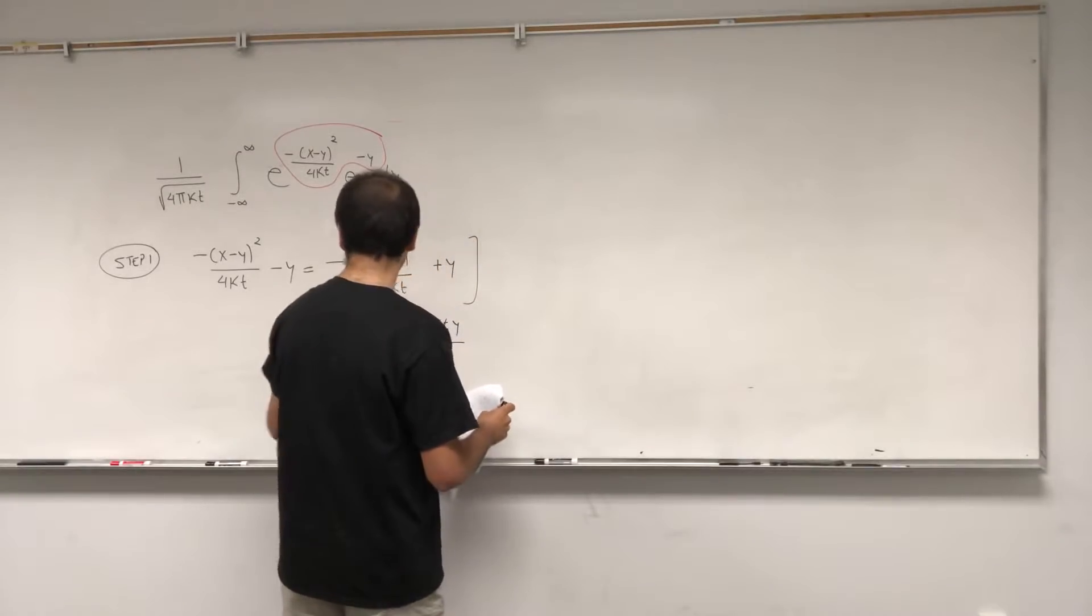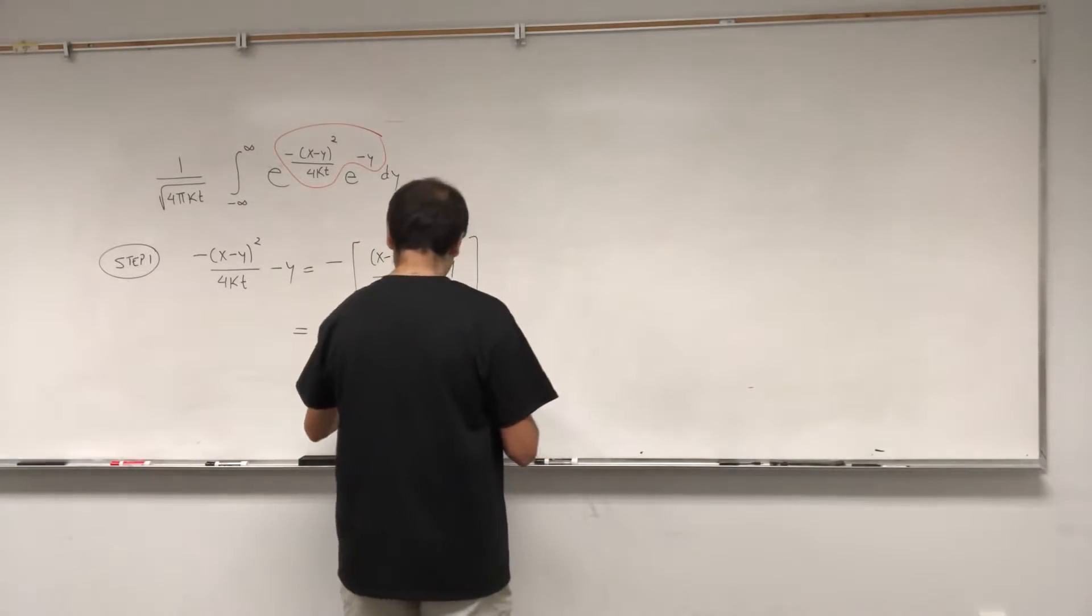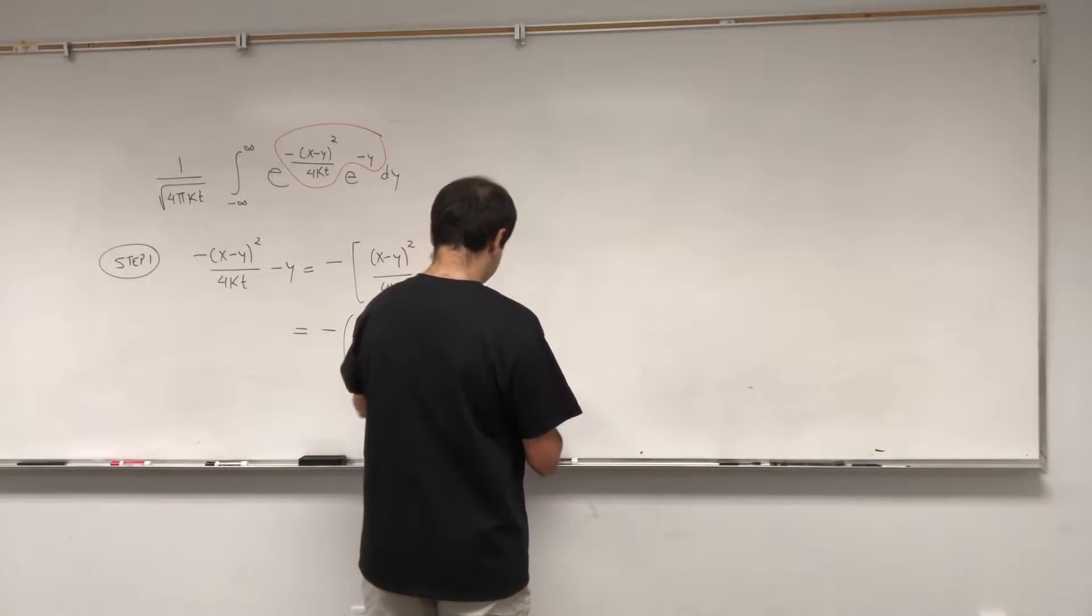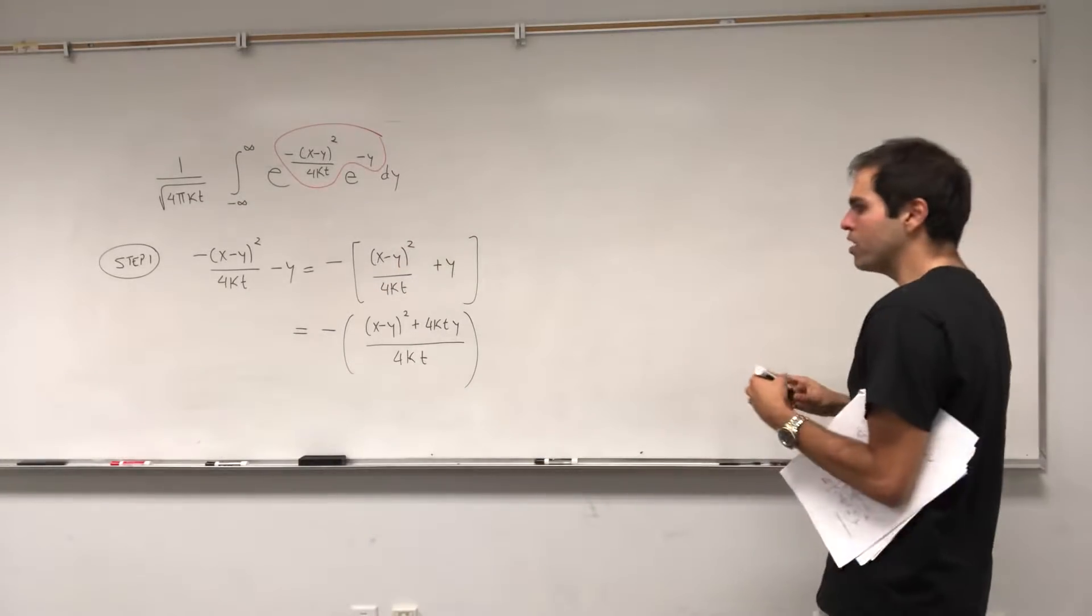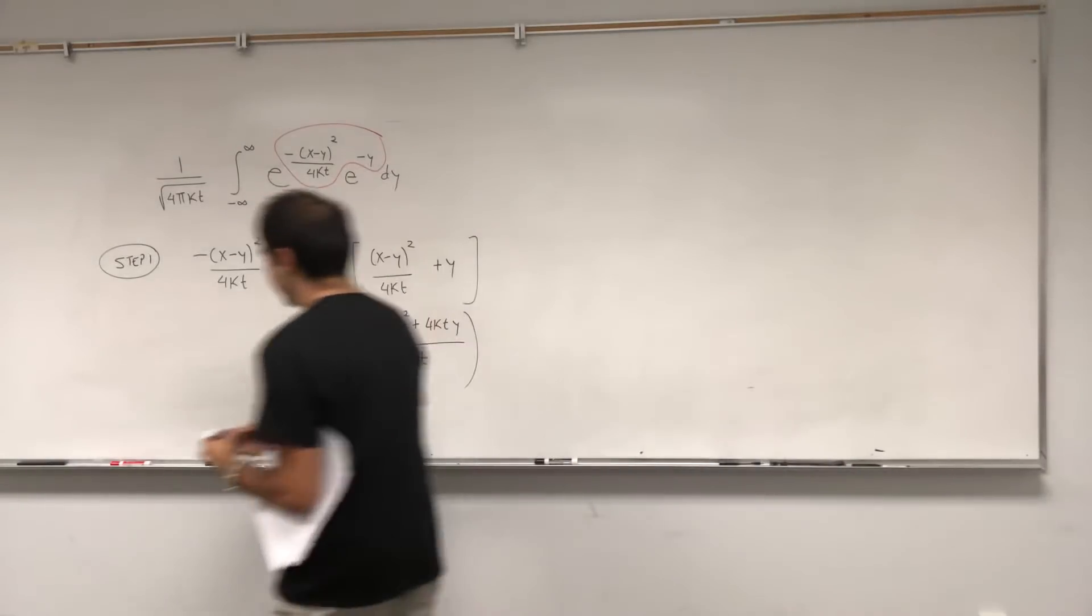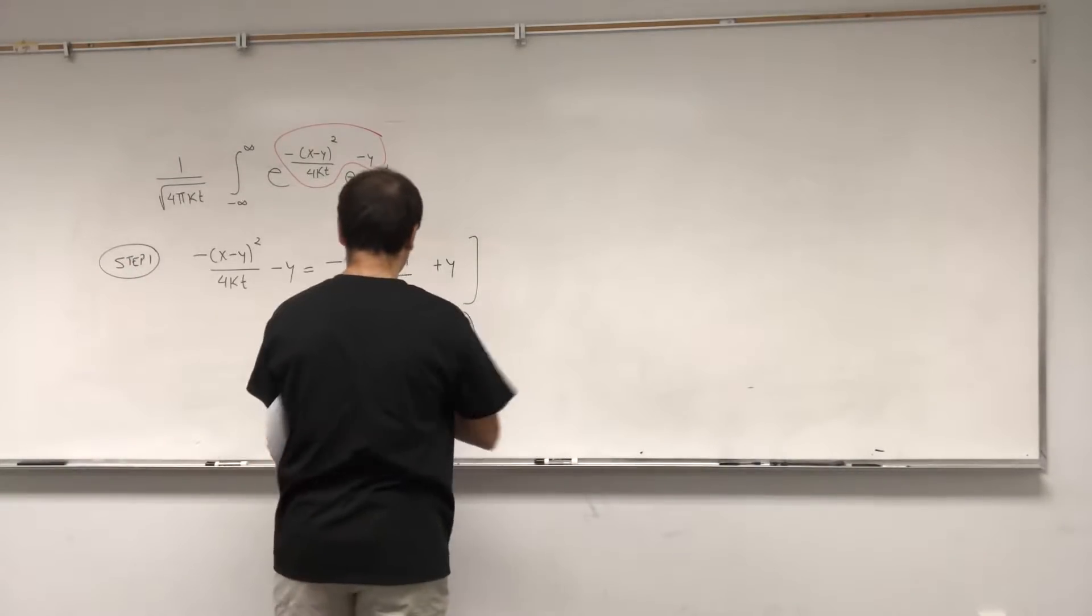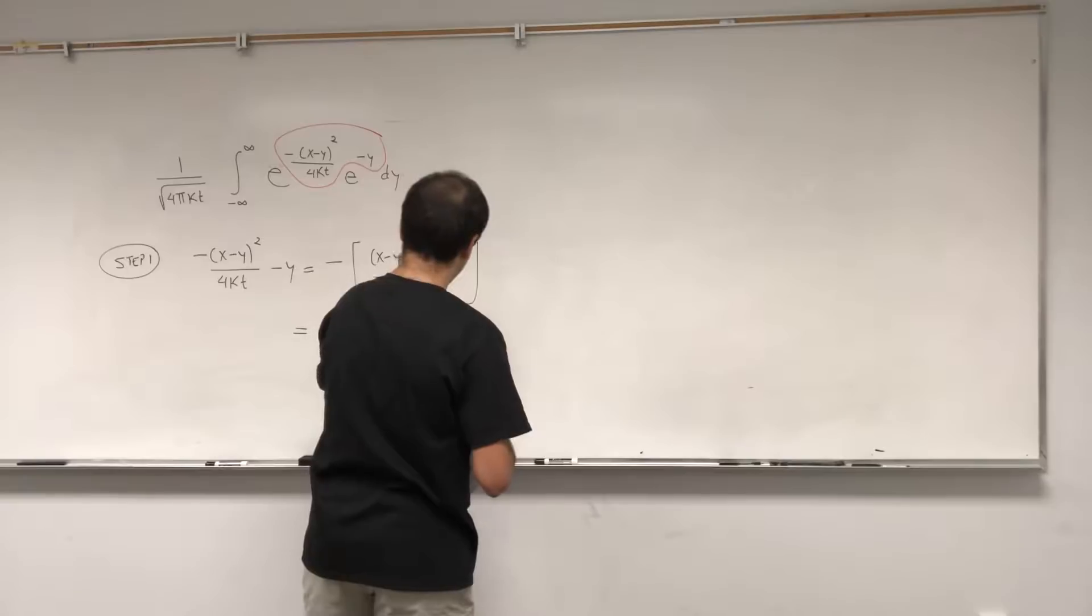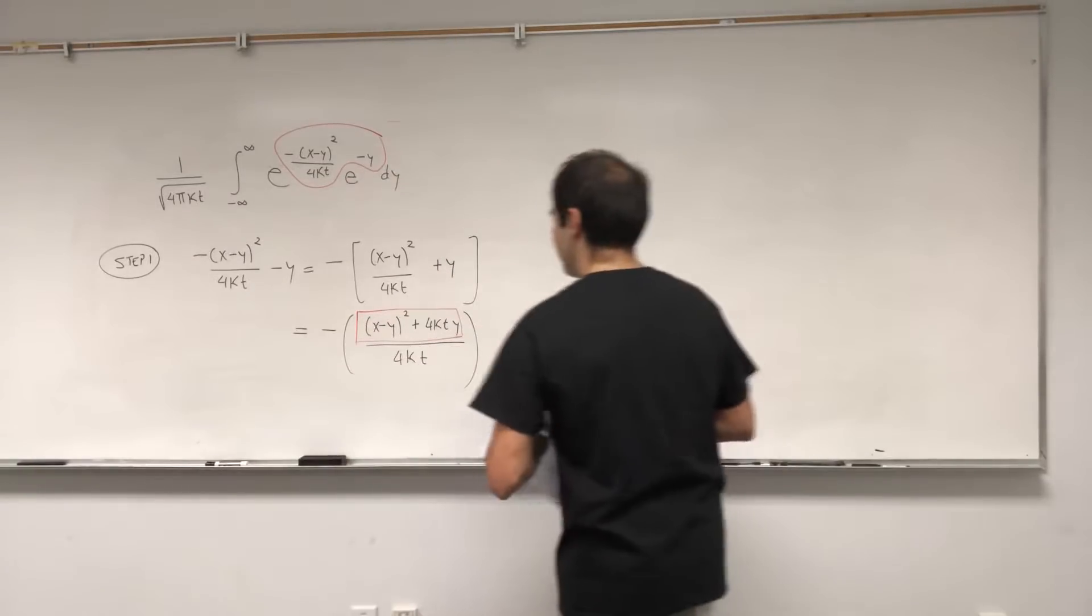And again, just put it on a common denominator: minus x minus y squared plus 4kt y. Again, for all the kt's in the world, this is for you, over 4kt. And now, as I said, we want to focus on the numerator here.